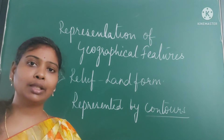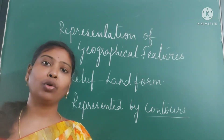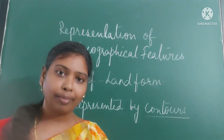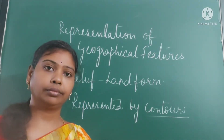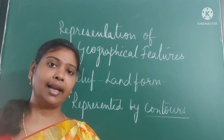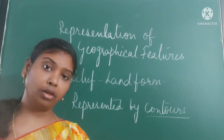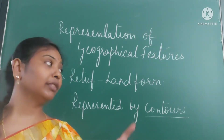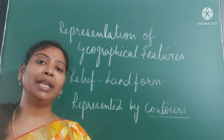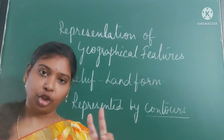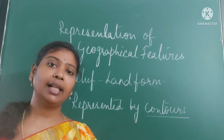Contours have some characteristics. Contours are brown in colour. And just like isovars and isohyets, contours are also imaginary lines which join the places at the same elevation above the mean sea level.